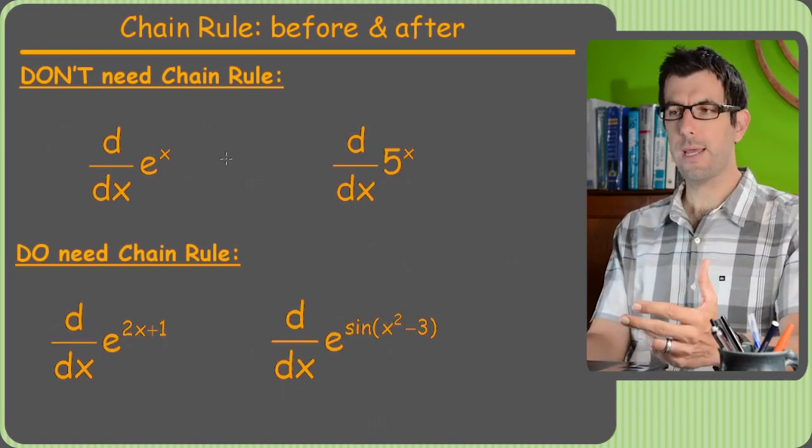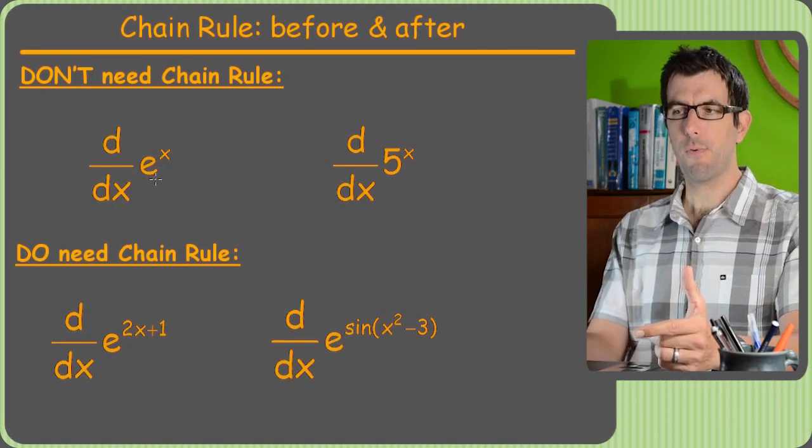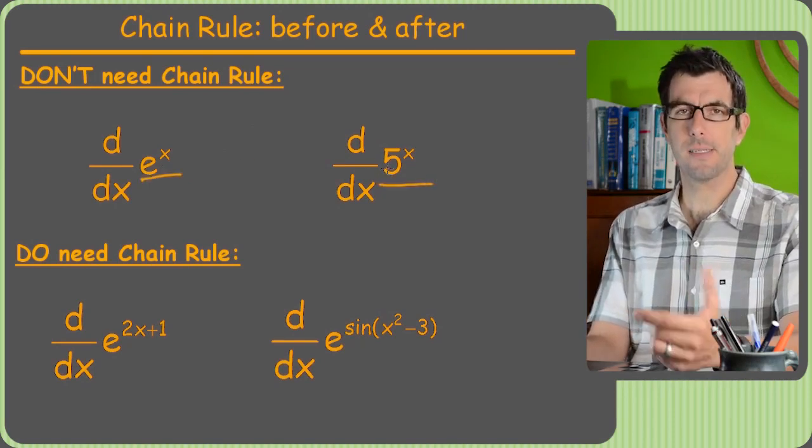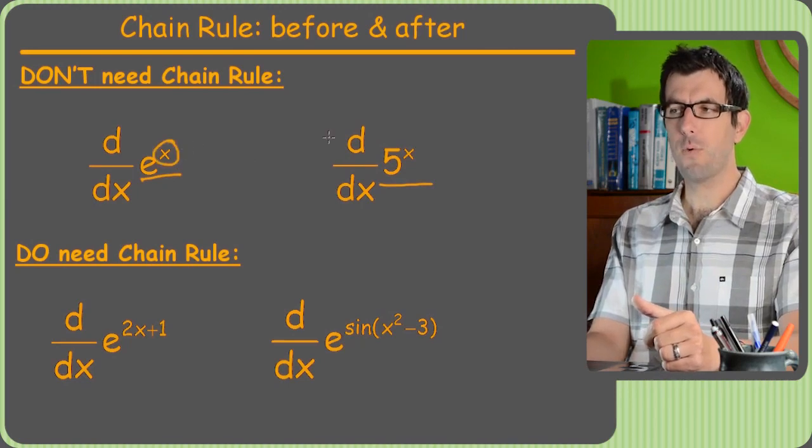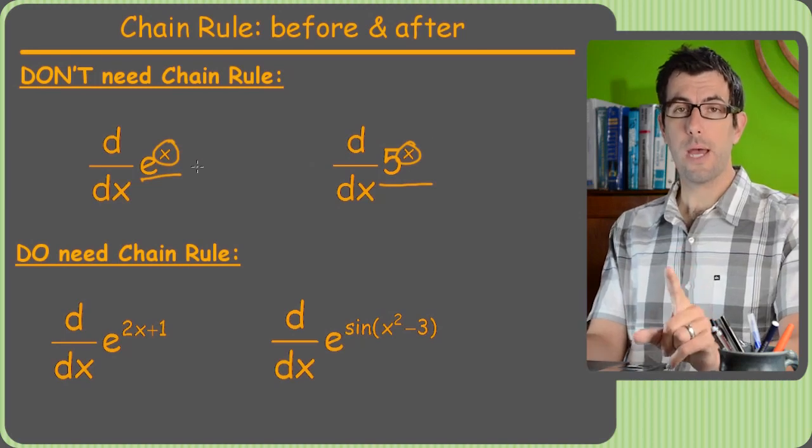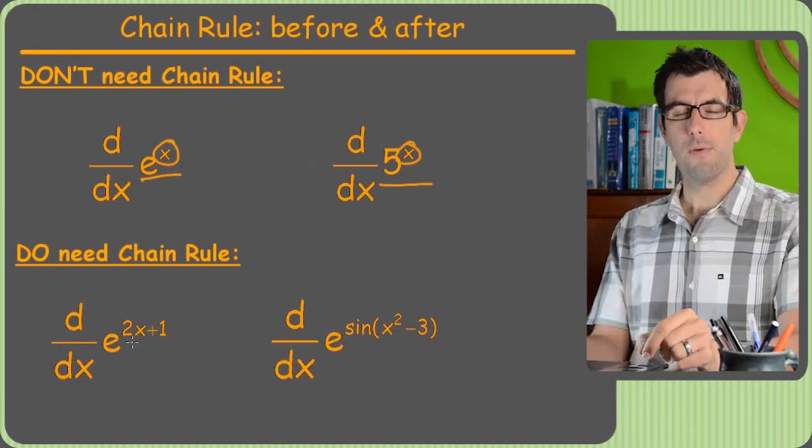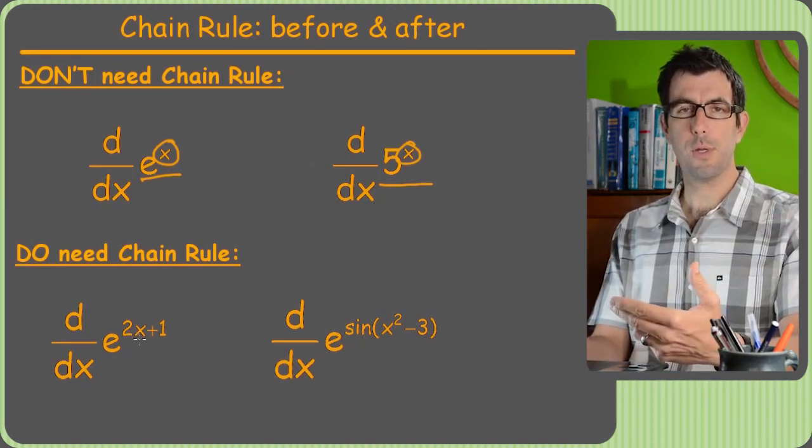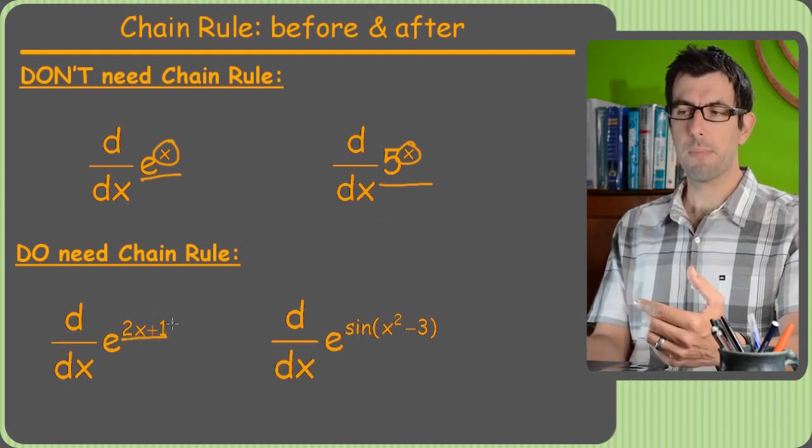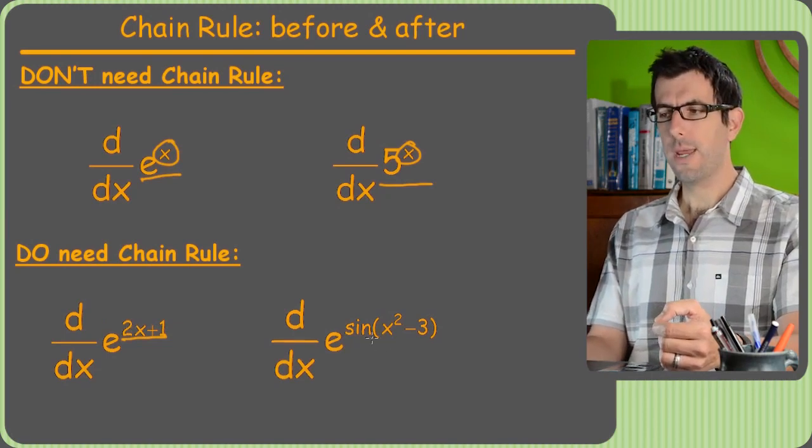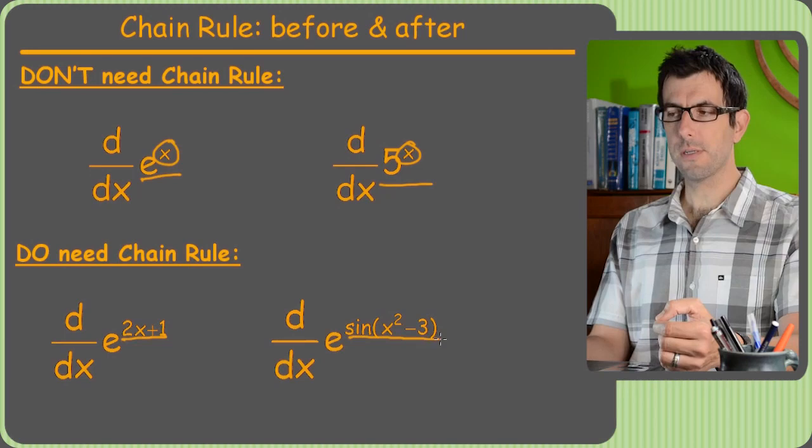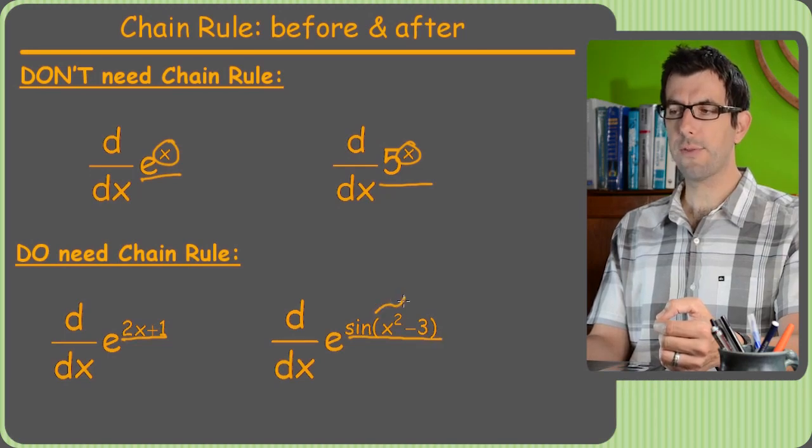Alright so last one we look at exponentials. Before it was always just e to the x or 5 to the x or a number to the x. The point is the exponent had to be x or it could have been y or something but it had to be a single letter without any exponents on it. But now we're gonna be able to do the ones that are much more common in math which is you have a big polynomial as the exponent of e or you have in this case a pretty nasty one. The exponent is a sine function which itself is gonna require the chain rule.